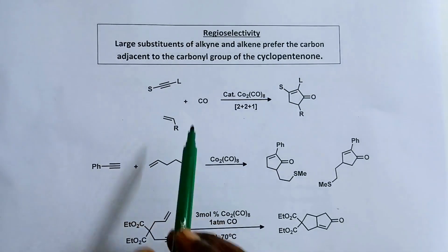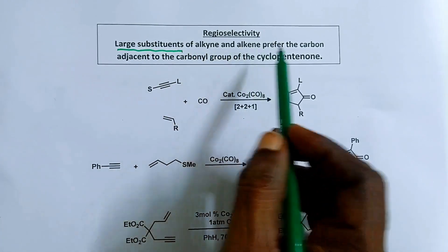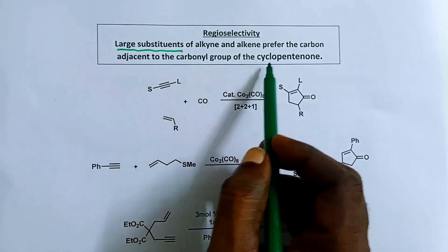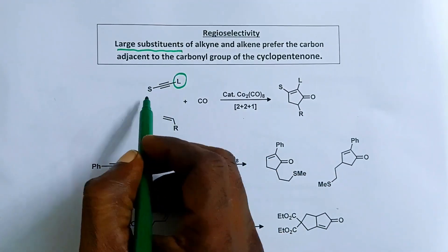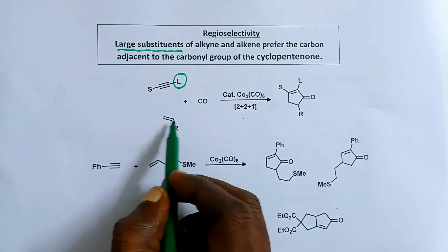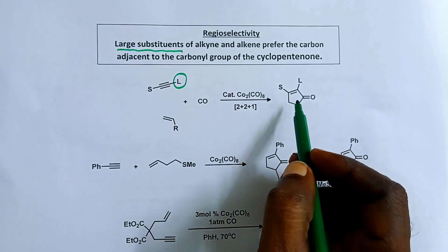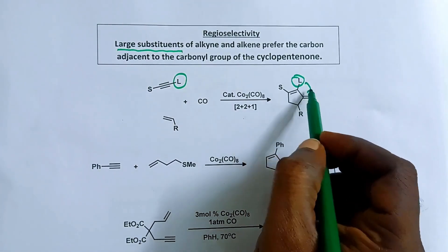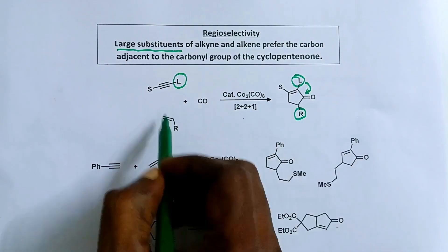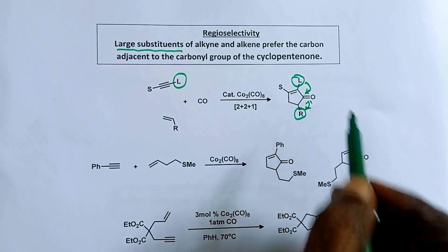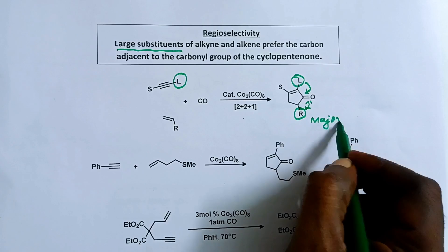How about the regioselectivity? Large substituents of alkyne and alkene prefer the carbon adjacent to the carbonyl group of the cyclopentenone. For example, if alkyne bears a large group and a small group, and alkene also bears a substituent R, then in the product cyclopentenone the large group comes closer to the carbonyl-adjacent carbon. Similarly, the R group of the alkene also comes closer to the carbonyl. So this is the regioselectivity, and this is the major regioisomer.